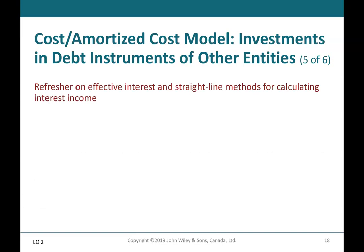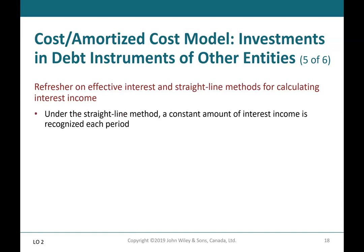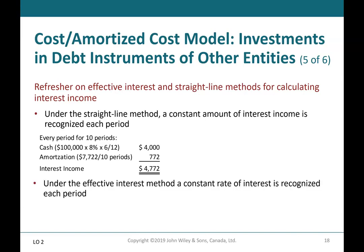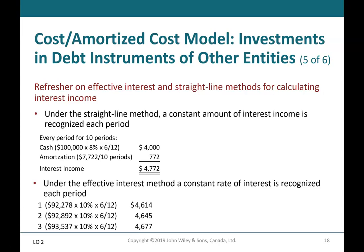Cost/amortized cost model — refresher on effective interest and straight-line methods for calculating interest income. Under the straight-line method, a constant amount of interest income is recognized each period. Under the effective interest method, a constant rate of interest is recognized each period. For period 1 it is $4,614; period 2 it is $4,645; and period 3 it is $4,677.